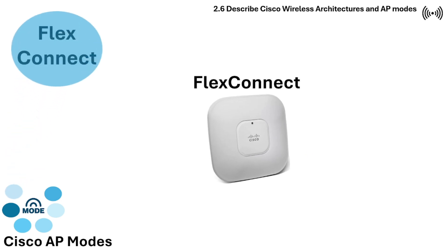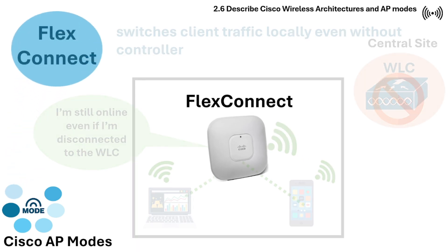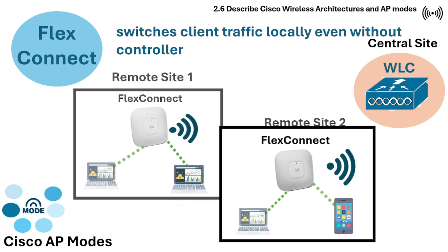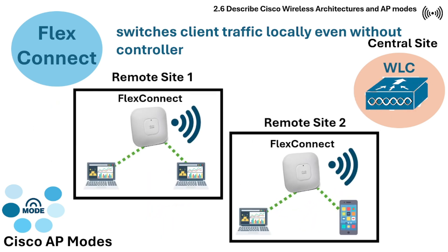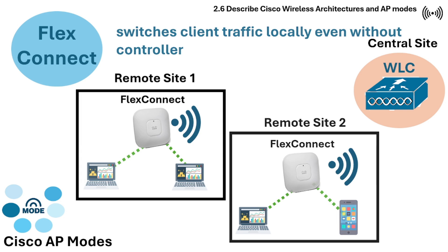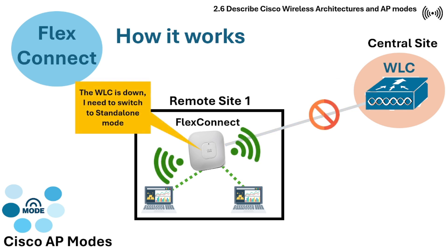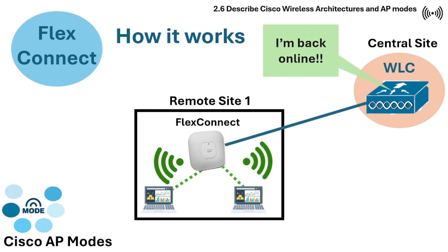FlexConnect mode allows a Cisco access point to keep serving wireless clients even if it loses connection to the wireless LAN controller. It's designed for remote sites or branch offices where the main controller is far away. When connected to the WLC, the WLC manages policies and configuration. If the link to the WLC goes down, the AP switches to standalone mode. When the WLC link comes back, the AP syncs again.